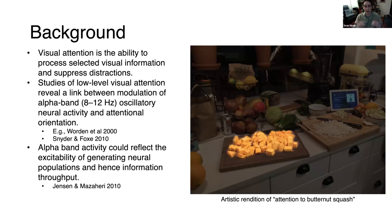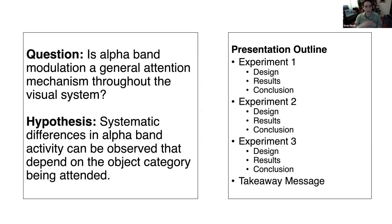What we wanted to ask here is whether we could extend that basic idea even further. Is alpha band modulation a general mechanism of selection throughout the entire visual system? In particular, would we be able to observe modulation of alpha power that's systematic and depends on the category of object that someone attends to? I'm going to describe three experiments really quickly that we ran to answer this question. The first one is the main experiment and the second two are controlling for different alternative interpretations of our result from the first experiment.